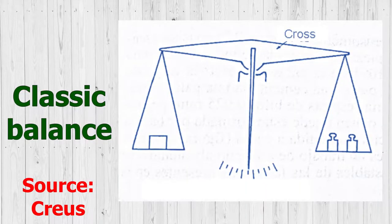Comparison with other standard weights is made by balances and scales. The classic balance is made up of a lever with equal arms, called a cross, that rests in its center and from whose ends hang the saucers, which support the weights. It can measure from a few grams to 300 kilograms.